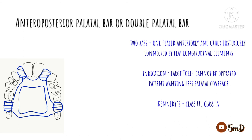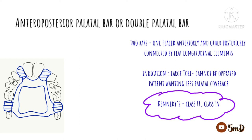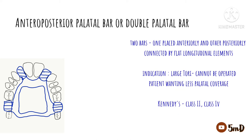Next we have the anteroposterior palatal bar, or the double palatal bar. As the name suggests, it has two bars — one in the anterior and one in the posterior — and longitudinal elements connect both. These bars are narrower than the strap and can be used when we need to relieve a torus in between, especially when the torus cannot be removed. Indications for the double palatal bar are Class 2 and Class 4 when the patient wants less palatal coverage compared to the palatal strap.